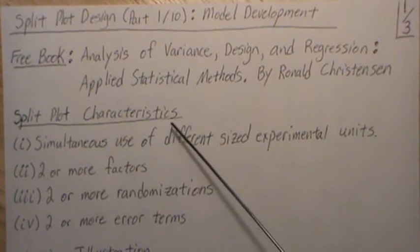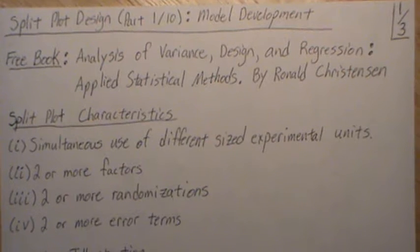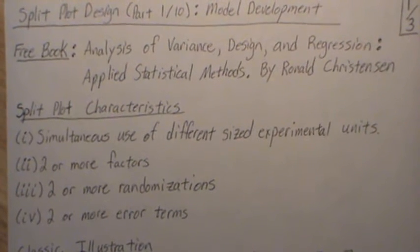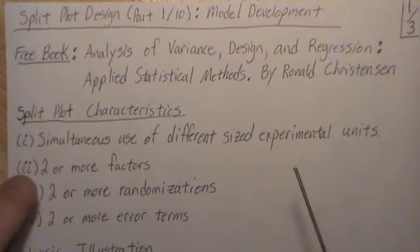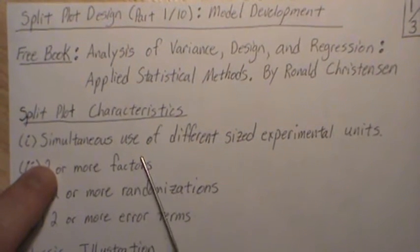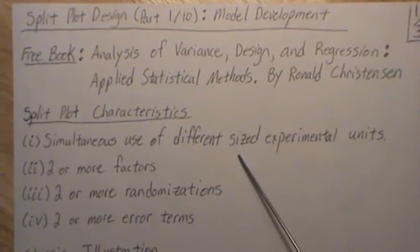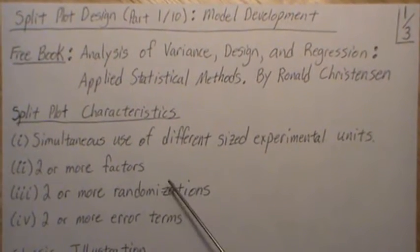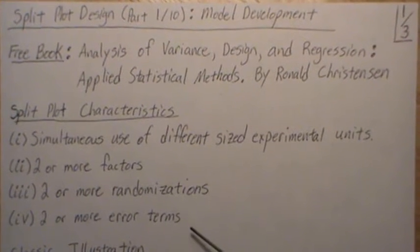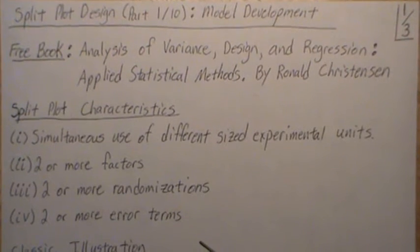So the split plot characteristics — some of this will make more sense as we progress through this mini-series, and when you come back and reread this it'll make crystal clear sense. There's simultaneous use of different sized experimental units, two or more factors, two or more randomizations, and two or more error terms in a split plot model.